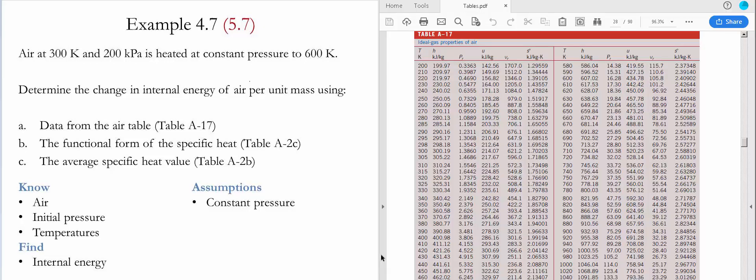The first choice to calculate the internal energy change is to use table A17, which provides the ideal gas properties for air. We look at the value for internal energy at 300 Kelvin, which is 214.07, and at 600 Kelvin, which gives us 434.78.